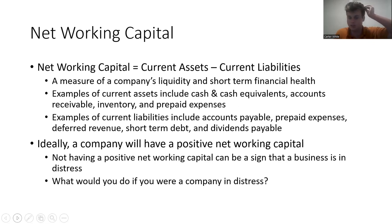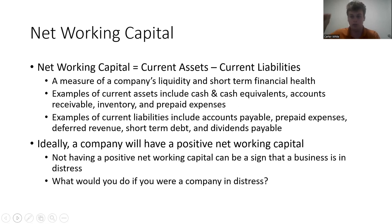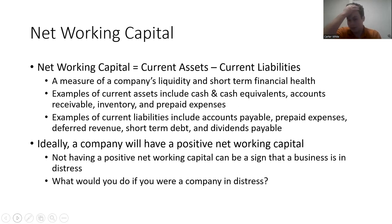Ideally a company will have positive net working capital. Not having positive net working capital can be a sign that a business is in distress — it doesn't have enough assets that can generate cash within a year to cover what it owes to third parties within a year. A distressed business would try to collect receivables quickly and stretch out its payables. Distressed companies often don't have much accounts receivable but have a lot of accounts payable and accrued expenses because they're really stretched for cash.